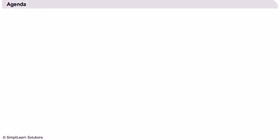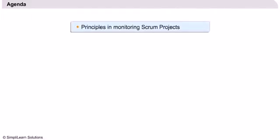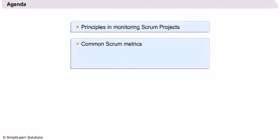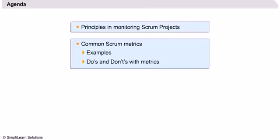We will now look at the detailed agenda for this lesson. We start off by setting up some first principles regarding monitoring of Scrum projects. Then we look at some common Scrum metrics with plenty of examples, as well as some best practices, do's and don'ts, around the use of the metrics.